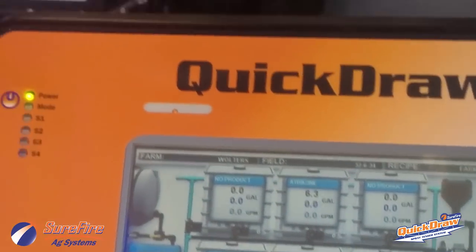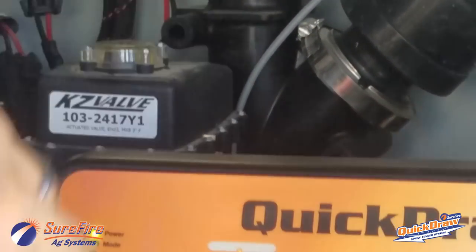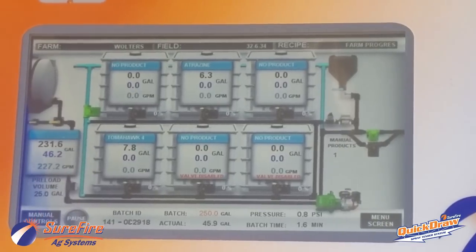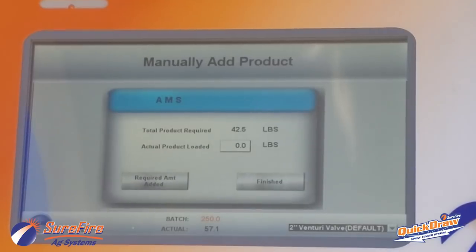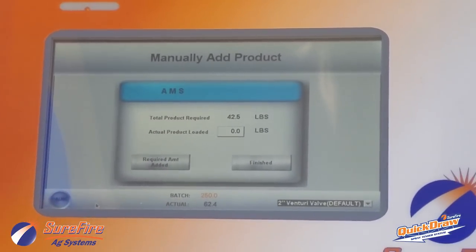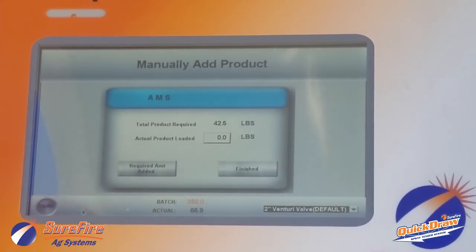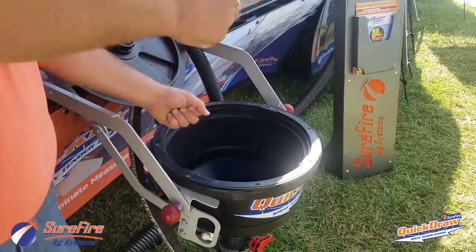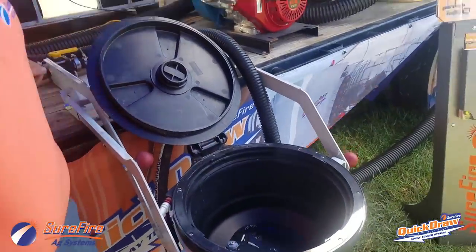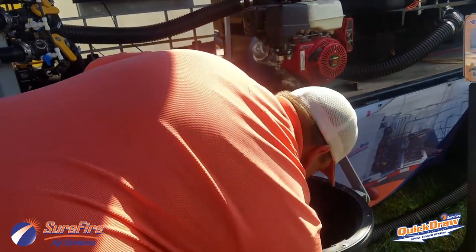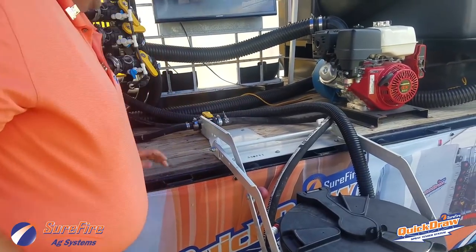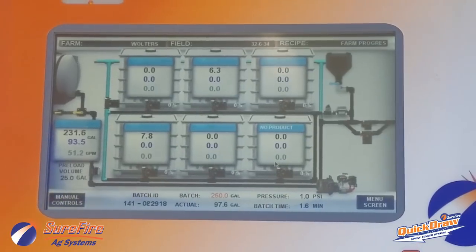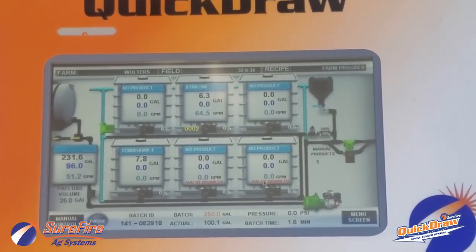The first thing that happens is our 3-inch valve opens and we put in 25 gallons of preload water. Once we reach 25 gallons, the 3-inch valve closes and the Venturi opens — this starts the chemical cycle. In the recipe, each product has an assigned position to load. The first product is our manual product, so we put that in through our manual inductor. We enter how much we loaded so it's included in the record, then press Finish to advance to the next product.